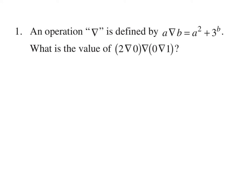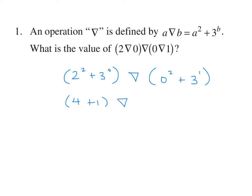We will use this definition throughout the question. So this becomes 2 to the power of 2 plus 3 to the power of 0. And then we have this symbol, and this becomes 0 to the power of 2 plus 3 to the power of 1, entirely based on that definition. So this is 4 plus 1, symbol, and this is just 3.